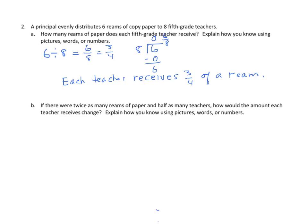Now this is an interesting one. And you're going to have something similar to this in your homework, too. If there are twice as many reams of paper and half as many teachers, how would the amount each teacher receives change? Well, let's go back to the original problem. We had 6 reams originally. So if I had twice as many reams, I would have 6 times 2 is 12. So that's my reams. And half as many teachers. Well, I had 8 teachers. Half as many is divided by 2. I would have 4 teachers.